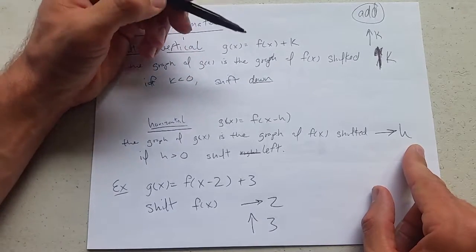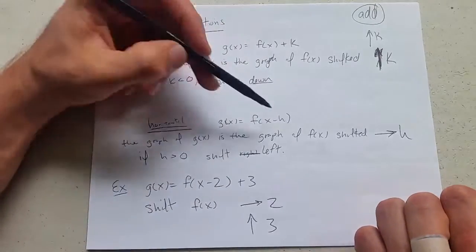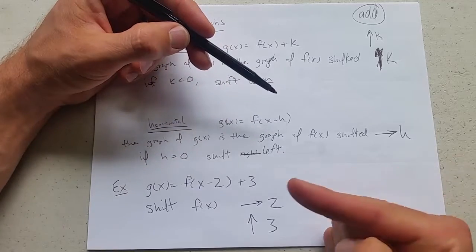Now this is counterintuitive. So f of x minus h, you go h to the right. If h is negative, which would look like x plus h, you would shift to the left.